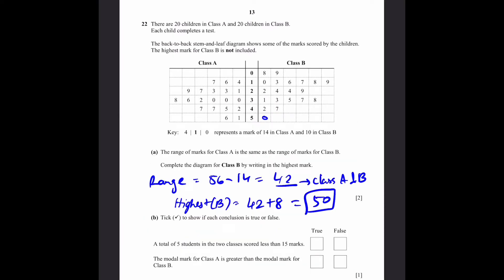B. Tick to show if each conclusion is true or false. A total of 5 students in the 2 classes scored less than 15 marks. Let's check that. So, there's 1, 2, 3, 4, 5. That's correct. How do we know that? Because when you combine the tens digit with the ones digit on both sides, we'll get 10, 13, 8, 9 for this side, and over here is 14. All of less than 15, so that's 5 students, and that's correct.